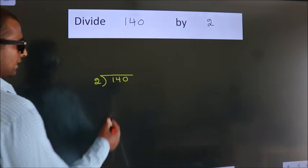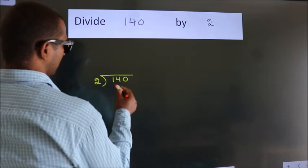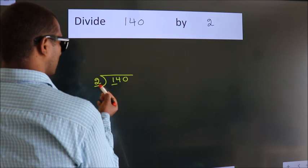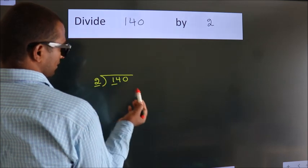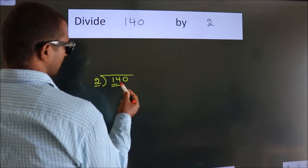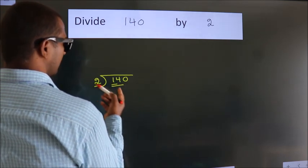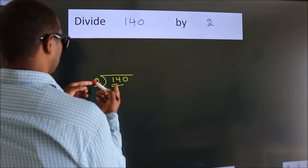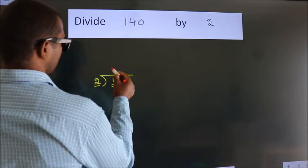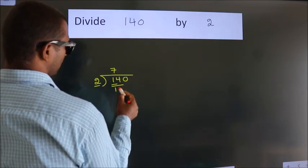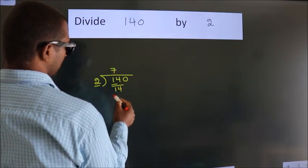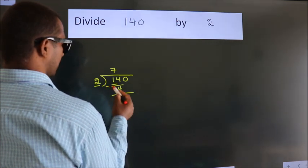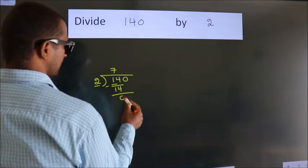Next, here we have 1 and here 2. 1 is smaller than 2, so we should take 2 numbers: 14. When do we get 14? In the 2 times table — 2 sevens is 14. Now we should subtract. We get 0.